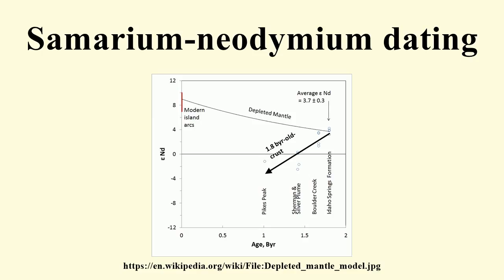Sm-Nd geochemistry: the concentration of Sm and Nd in silicate minerals increases with the order in which they crystallize from a magma according to Bowen's reaction series. Samarium is accommodated more easily into mafic minerals, so a mafic rock which crystallizes mafic minerals will concentrate neodymium in the melt phase faster relative to samarium. Thus, as a melt undergoes fractional crystallization from a mafic to a more felsic composition, the abundance of Sm and Nd changes, as does the ratio between Sm and Nd. Thus, ultramafic rocks have high Sm and low Nd and therefore high Sm/Nd ratios.